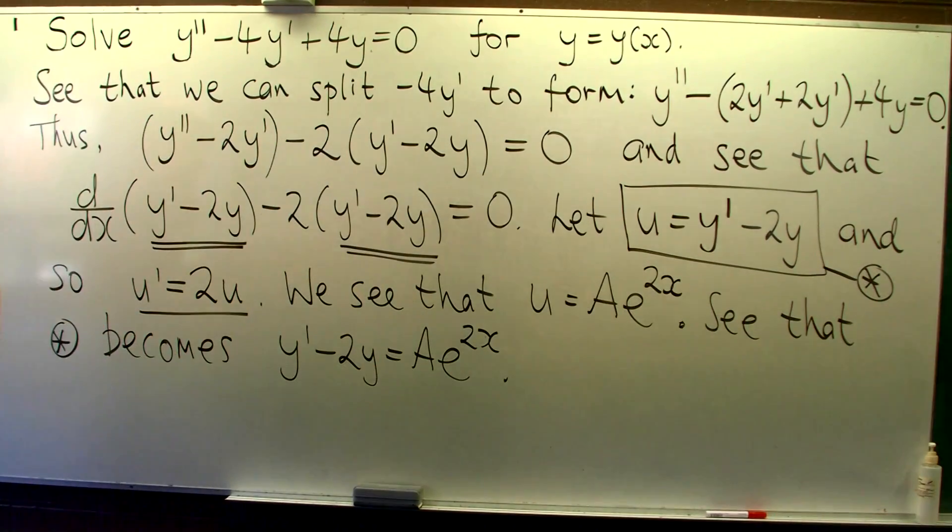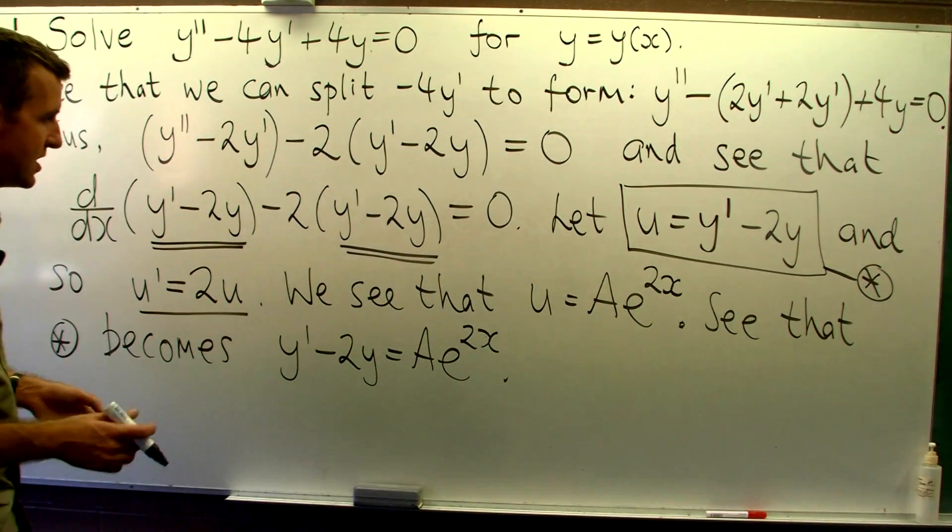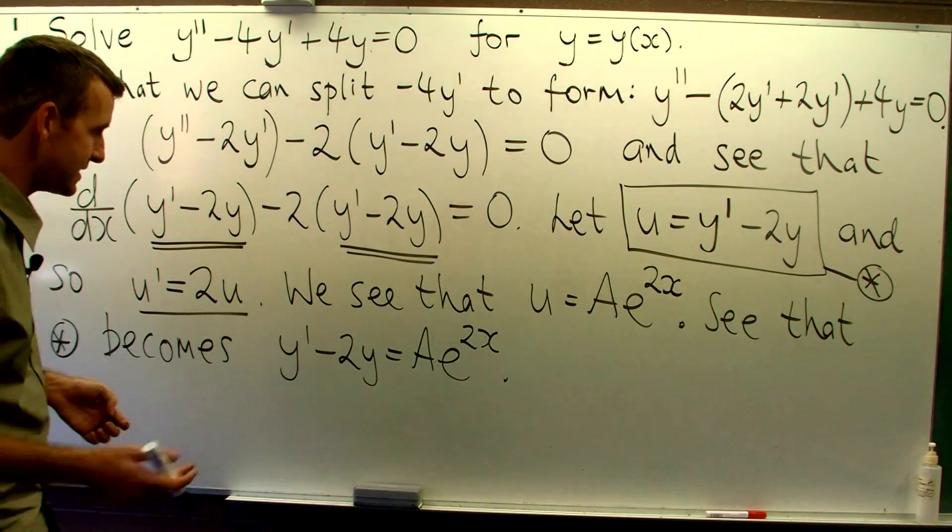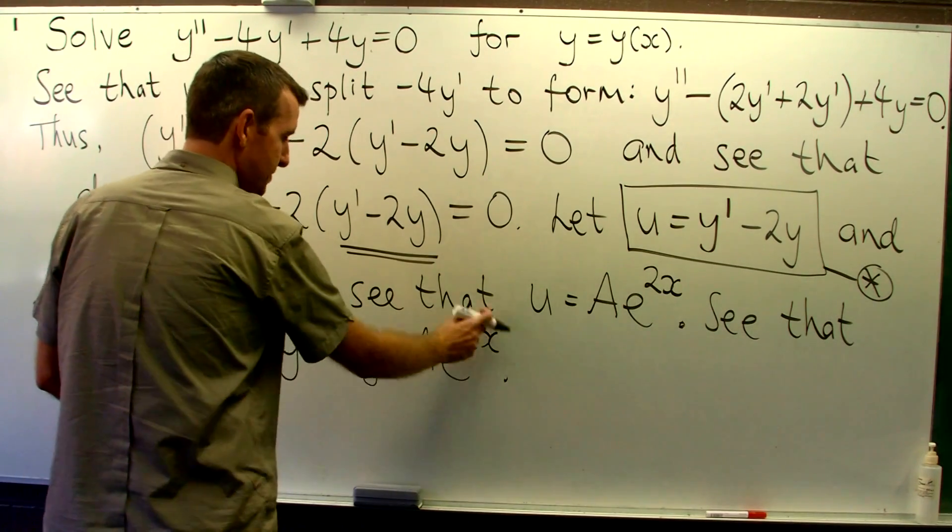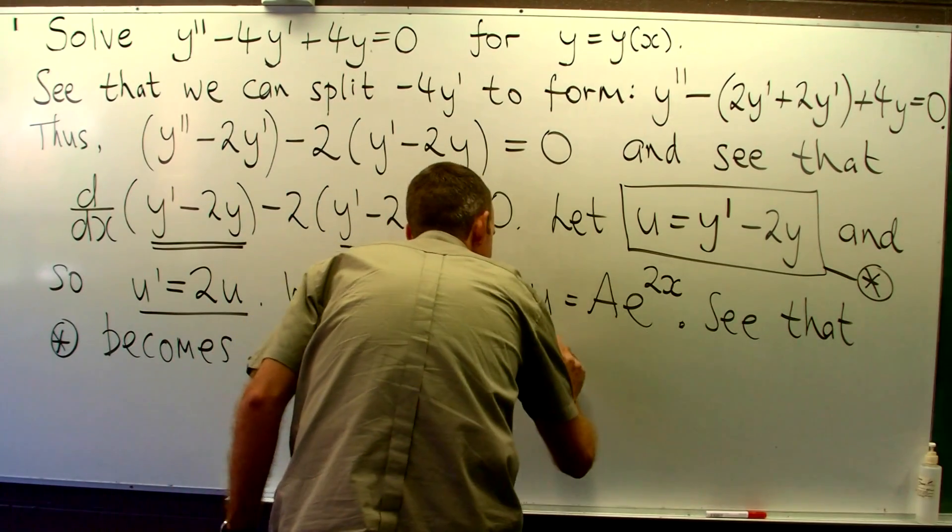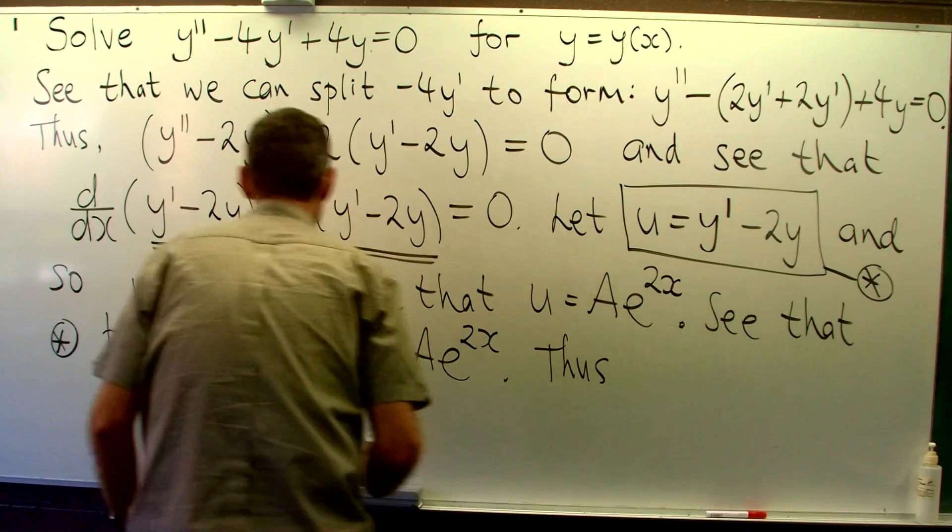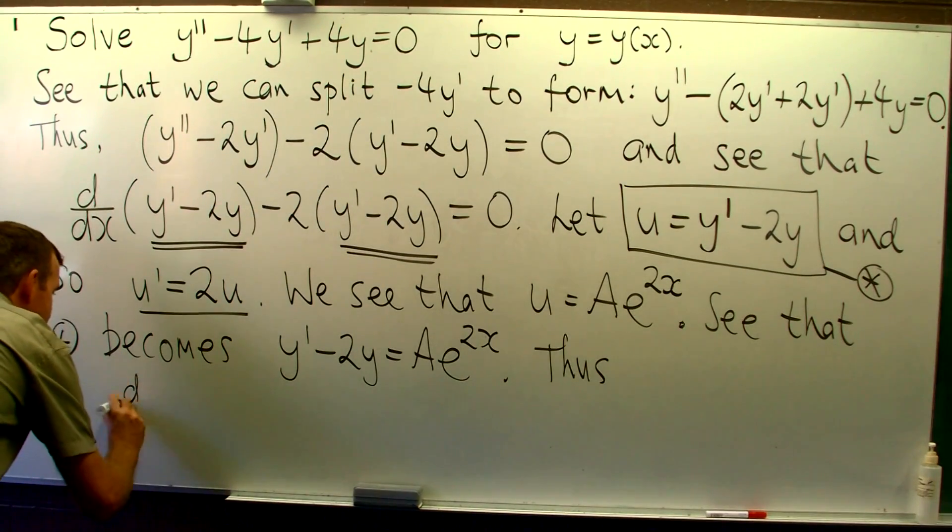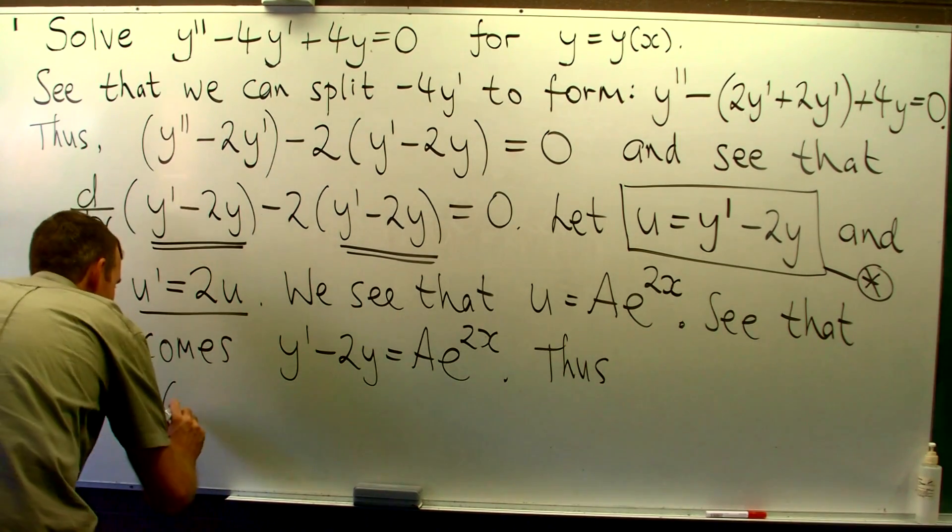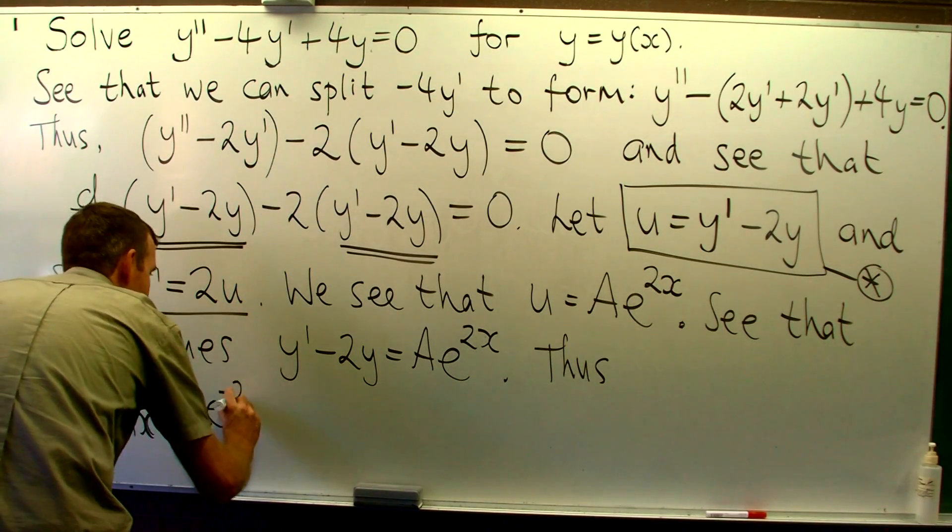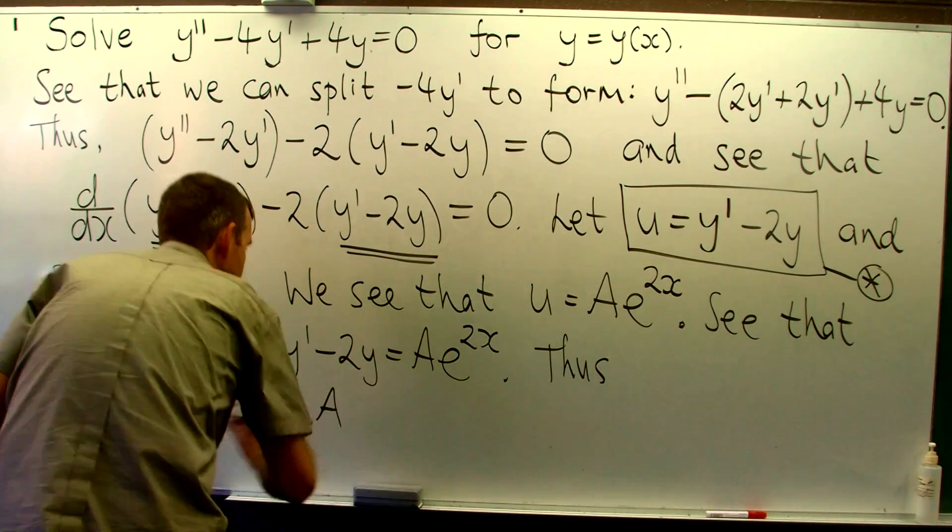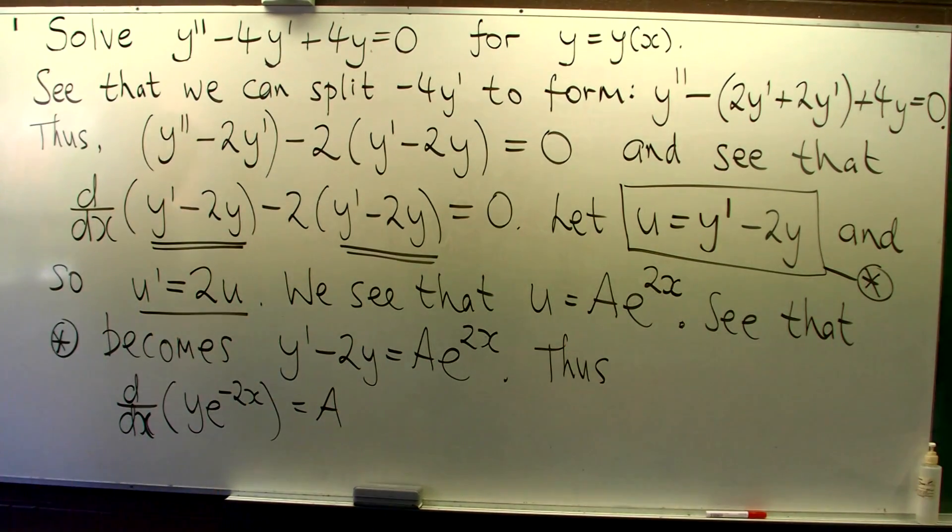Now if we multiply through by the integrating factor on both sides, the integrating factor here will be e to the minus 2x. We multiply on both sides, this part drops out, and on the left-hand side, we can form the following. The left-hand side is just the derivative of y times the integrating factor. So what we do is integrate both sides and rearrange.